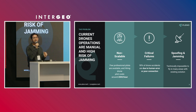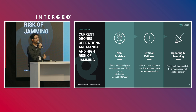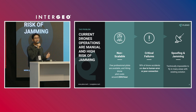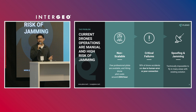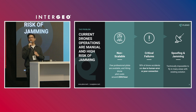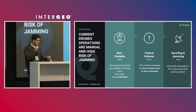The last problem, which some of you might have heard of, is spoofing or jamming. In some areas — of course in the military, but also in areas like airports or busy areas — there are jammings, so drones cannot fly in those areas.